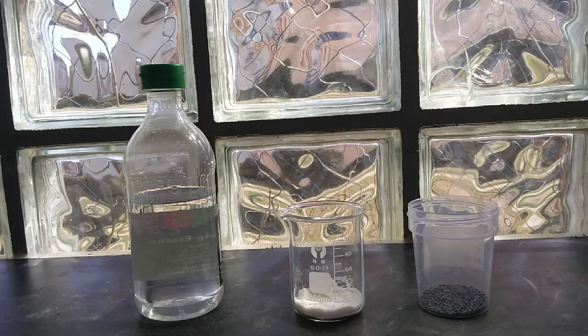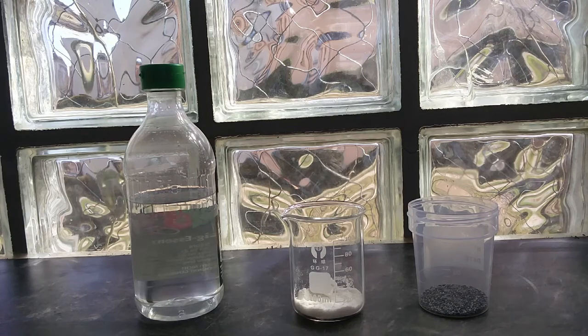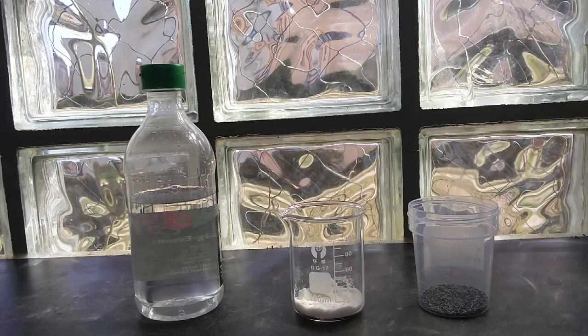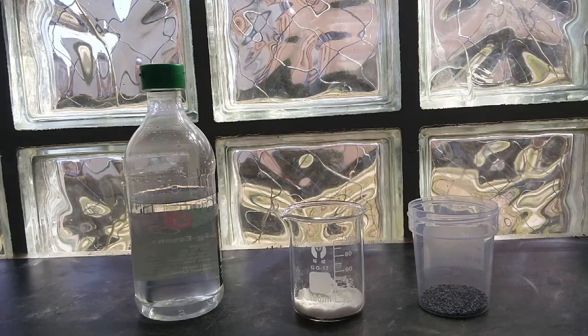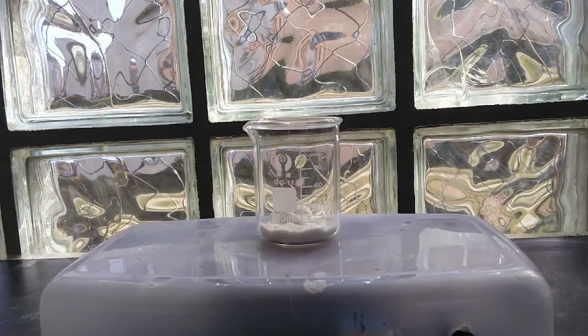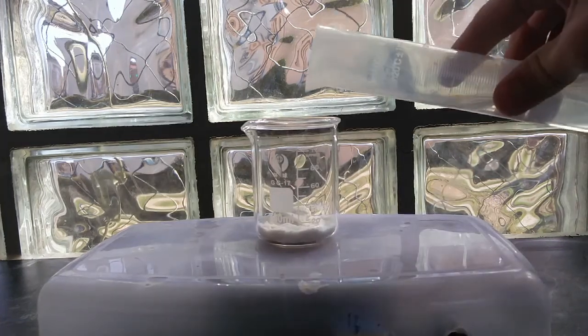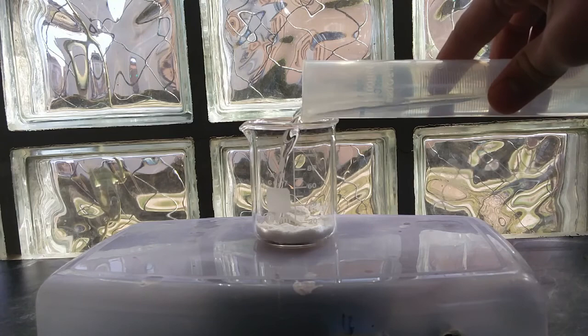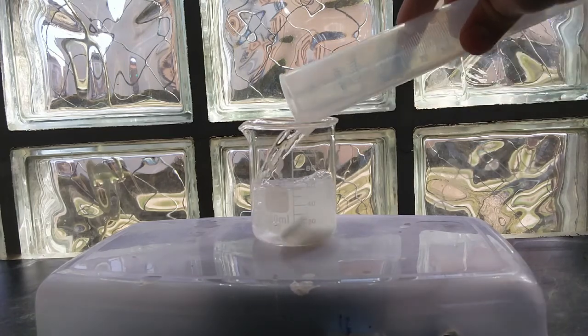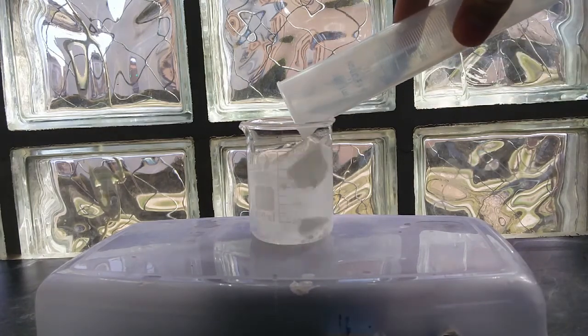First we prepare a solution of potassium nitrate in water. We dissolve 10 grams of this in about 50 milliliters of water.